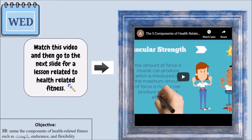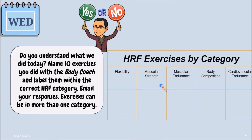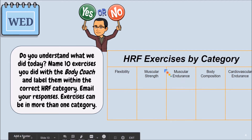For Wednesday, the focus is on health-related fitness and the five components of fitness. There's a short video on the benefits of the five components, aligned with national and state standards. The child follows along to a workout embedded in the presentation, then names 10 exercises they did with the Body Coach, labels them within the correct health-related fitness category using the table, and emails their responses.